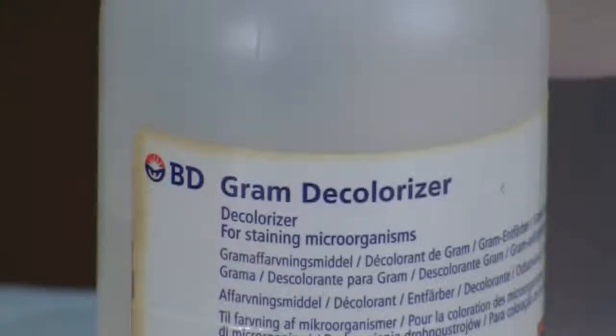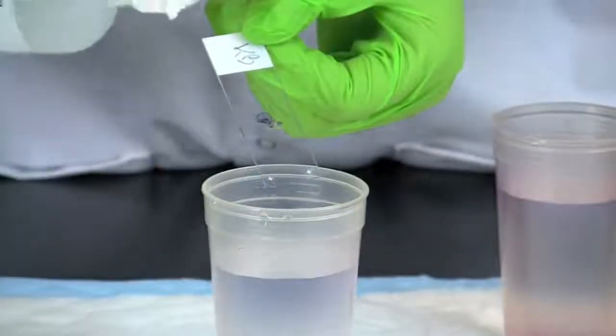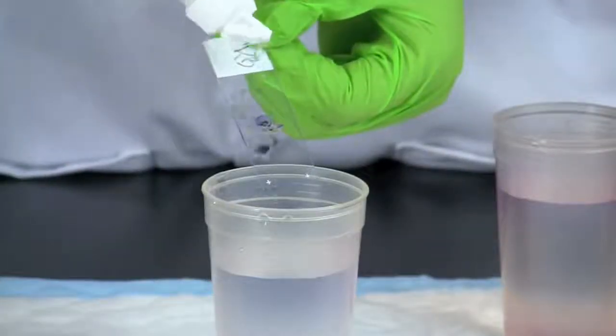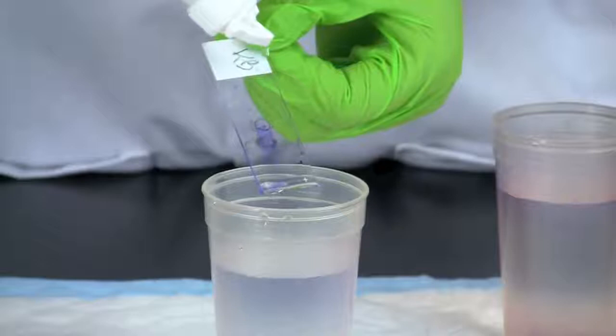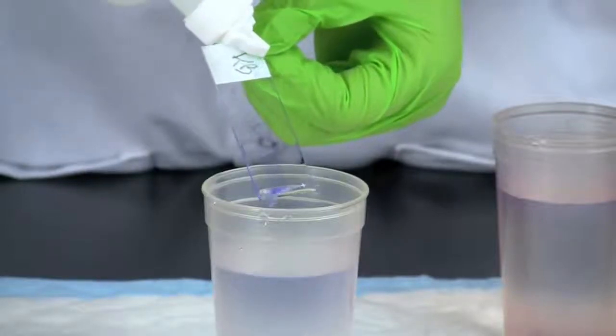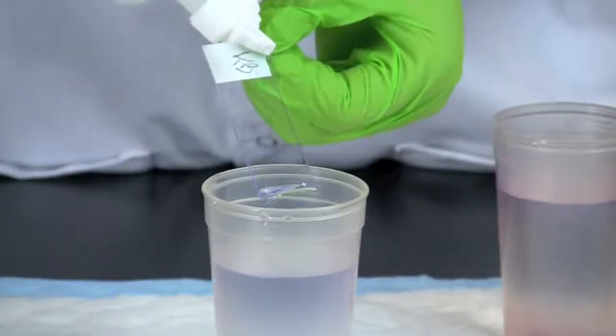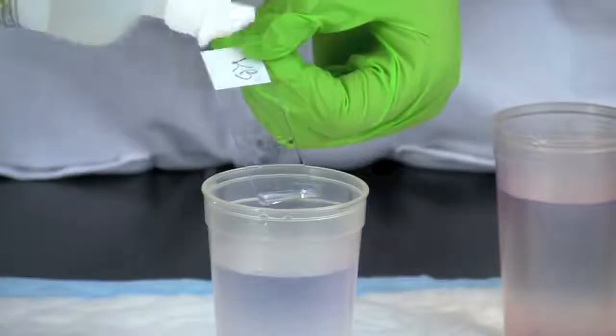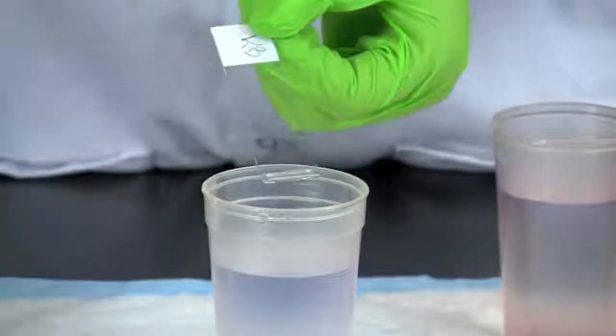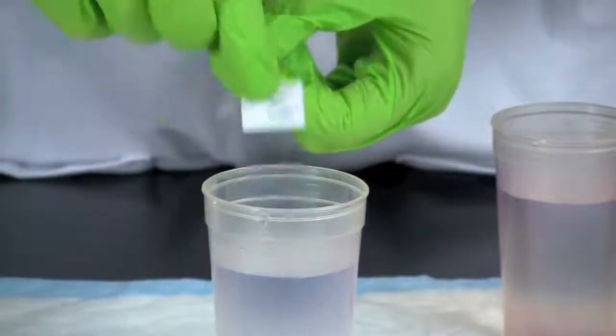Now add a few drops of decolorizer. Let the decolorizer flow over the bacteria at a 45 degree angle until the flow is clear. Then finish by rinsing the slide in a beaker of water.